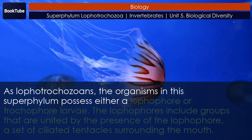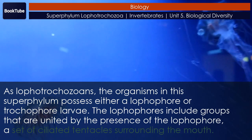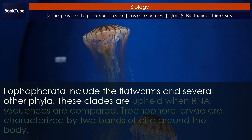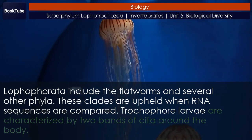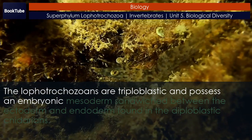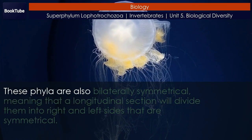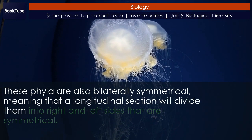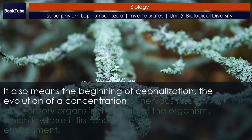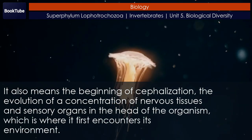The organisms in this superphylum possess either a lophophore or trochophore larva. The lophophores include groups united by the presence of the lophophore — a set of ciliated tentacles surrounding the mouth. Lophophores include the flatworms and several other phyla, and these clades are upheld when RNA sequences are compared. Trochophore larvae are characterized by two bands of cilia around the body. Lophotrochozoans are triploblastic and bilaterally symmetrical, meaning a longitudinal section divides them into symmetrical right and left sides. This also marks the beginning of cephalization — the concentration of nervous tissues and sensory organs in the head, where the organism first encounters its environment.